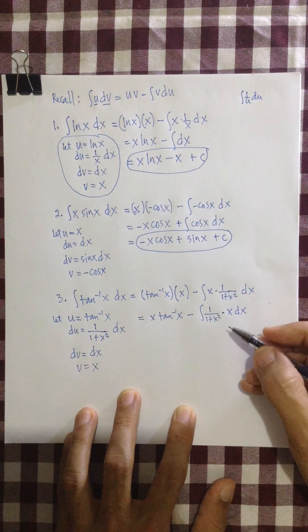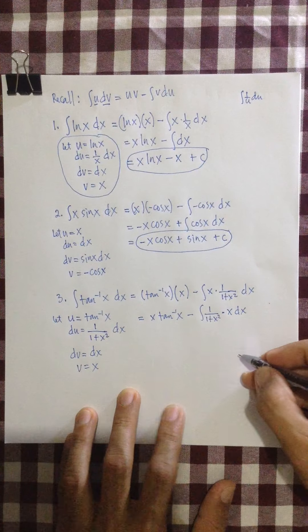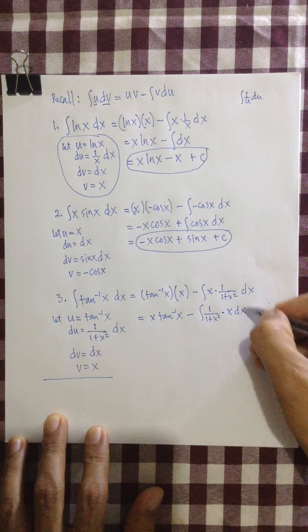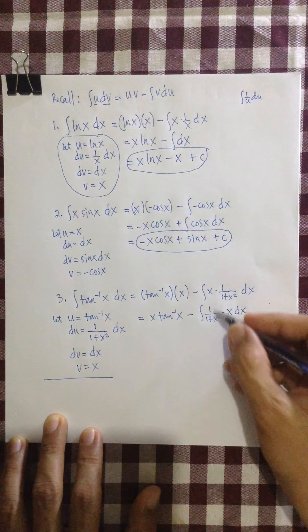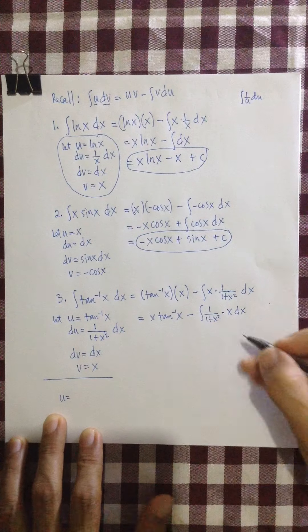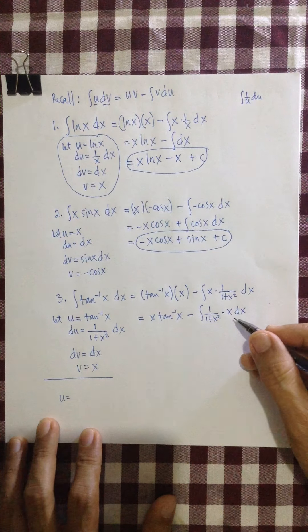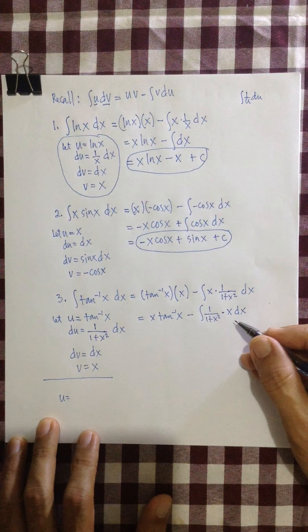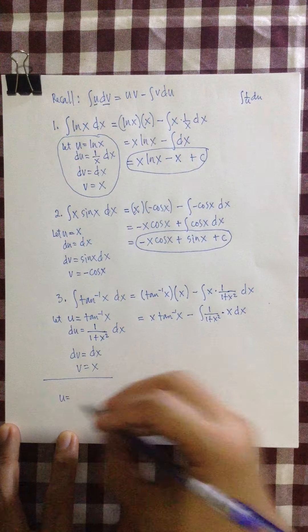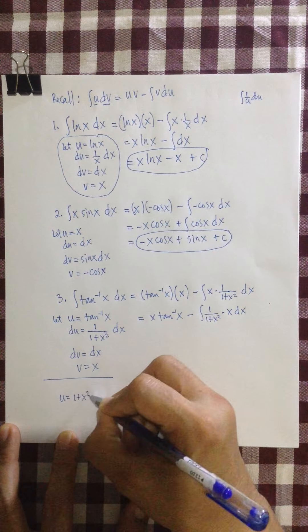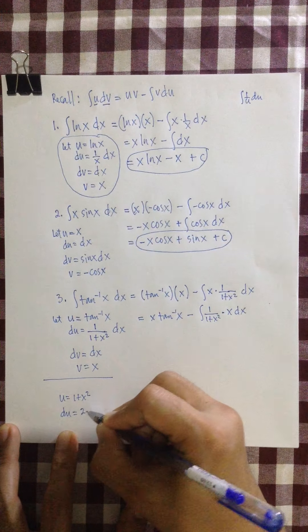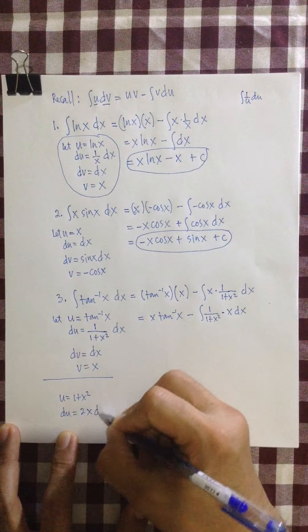But what is your du? So if you... As far as this one is concerned, to evaluate for the integral of this, you choose for your u. Your u actually... This is no longer integration by parts, by the way. This is just the basic integration that we did last time. Your u, of course, is 1 plus x squared. And your du is 2x dx.